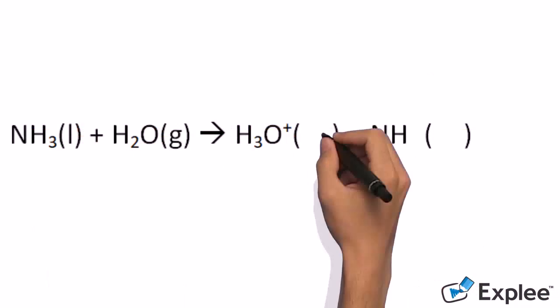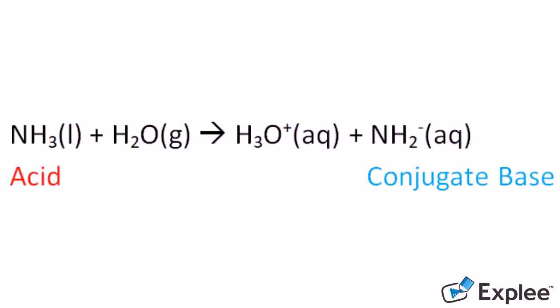As you can see, NH3 became more negative while H2O became more positive due to the gain of H protons. Let's look at a base and its conjugate.